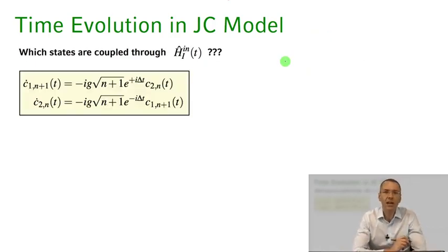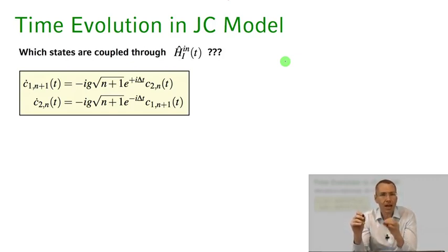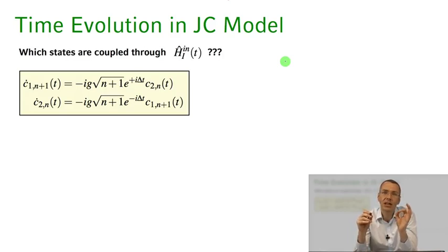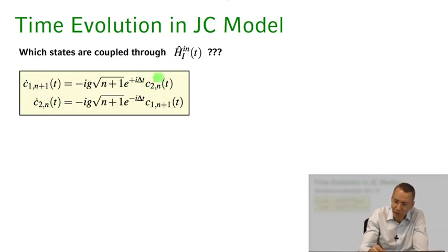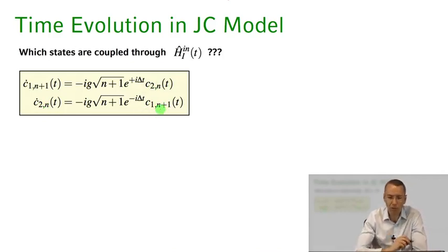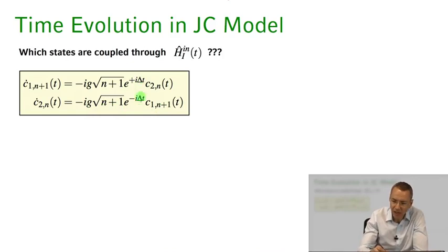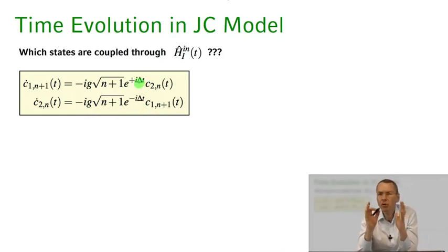Taking the ansatz wave function and plugging it into the Schrödinger equation in the interaction picture — similarly to the semi-classical case — we get these coupled equations. The derivative of the amplitude c₁,ₙ₊₁ is coupled to c₂ₙ, and the derivative of c₂ₙ is coupled to c₁,ₙ₊₁. The coupling strength is given by g times the square root of n+1, plus the standard detuning terms — very similar to the semi-classical description, with some special differences we'll discuss now.